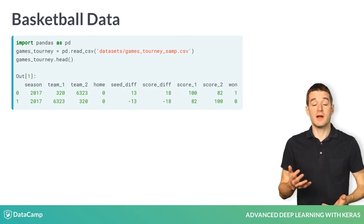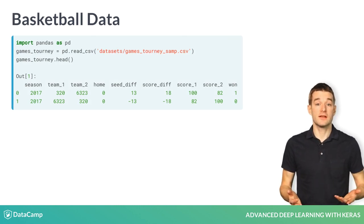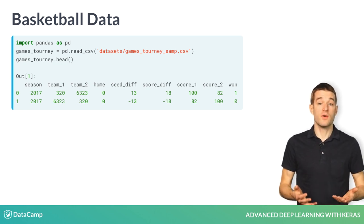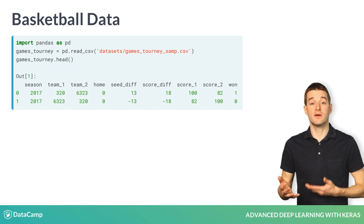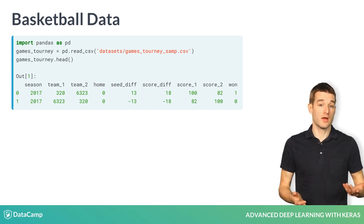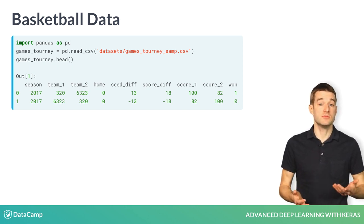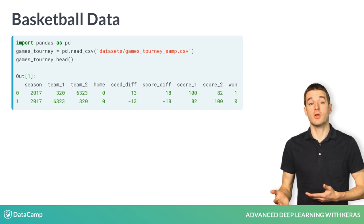Note that both the regular season and the tournament datasets have two rows per game, where the second row has the opposite signs of the first row. In other words, for a given game where the first team won, there is also a row in the dataset where team 1 and team 2 are swapped and the first team lost.